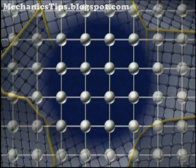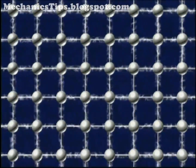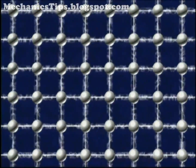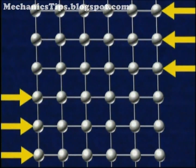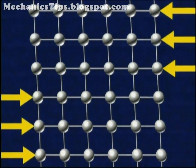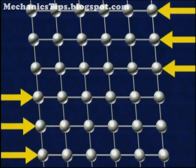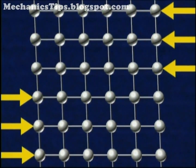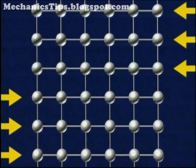All atoms in these crystalline structures are held in place by electromagnetic attraction to neighboring atoms. If a force or load is applied to a metal, these electromagnetic bonds stretch, allowing the atoms to move slightly. When the load is removed, the bonds pull the atoms back into position.